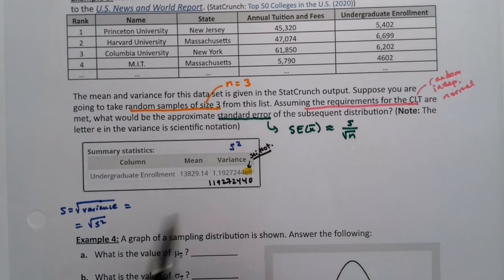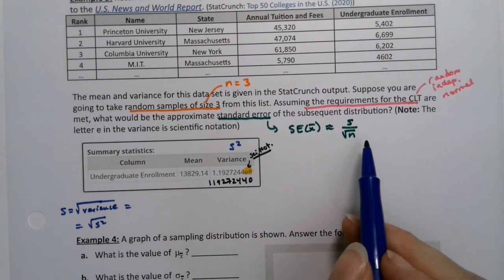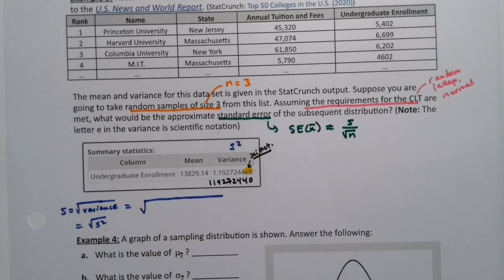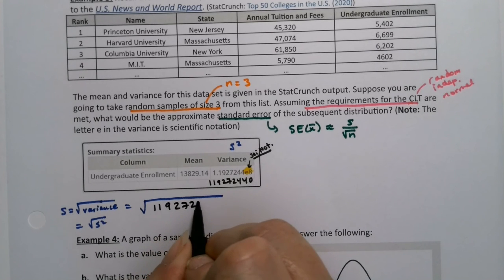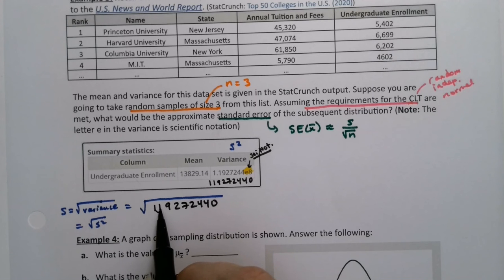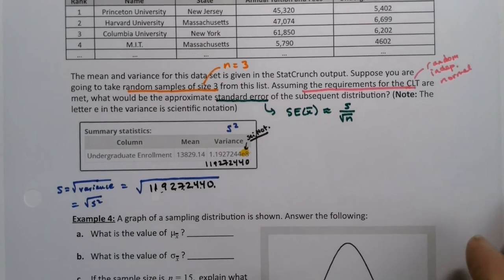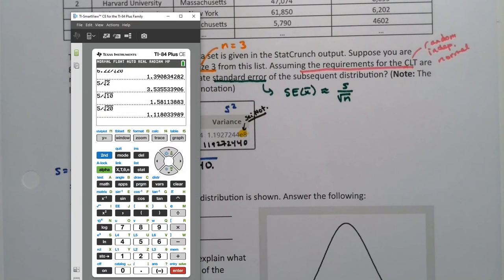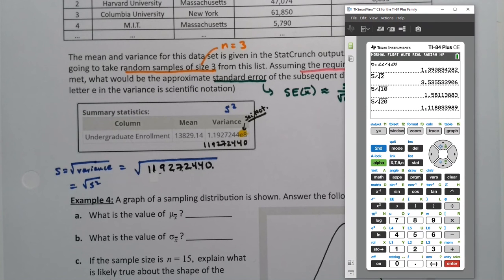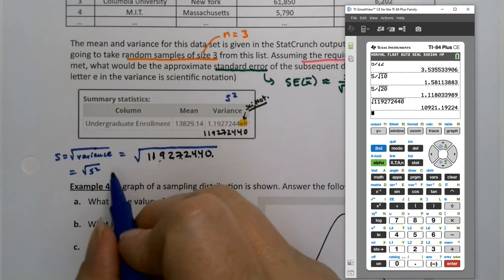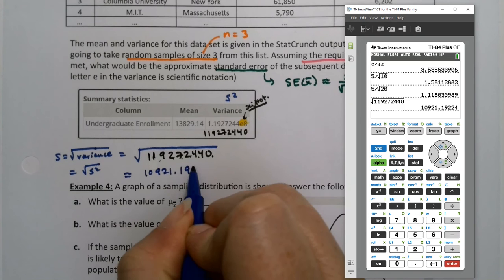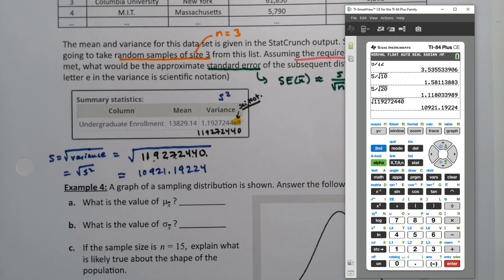So then that means that if I want to find the standard deviation to use in my formula, I need to take the square root of that number, 119,272,440. And again, that's one, two, three, four, five, six, seven, eight spots over. I will grab Desmos or a calculator. I take the second square root 119272440 and I get 10,921.19224.